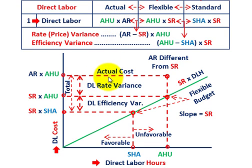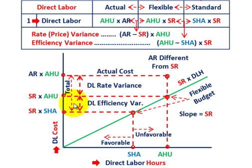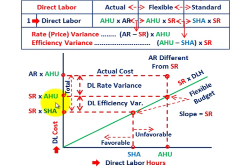Now for our variances on the graph. The total variance is between actual rate times actual hours used versus standard rate times standard hours allowed — the difference between our actual results and our standard cost. The direct labor efficiency variance falls on our budgeted line: it's the difference between standard rate times actual hours used and standard rate times standard hours allowed. That is actual hours used versus standard hours allowed, times the standard rate — our efficiency variance.